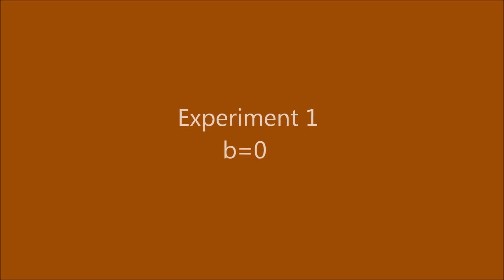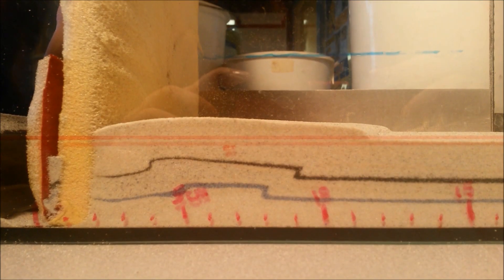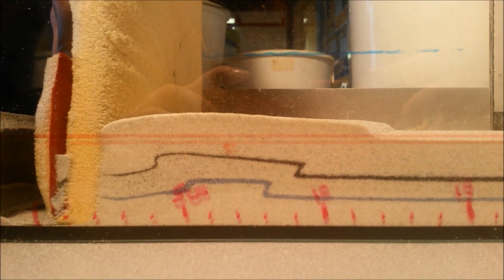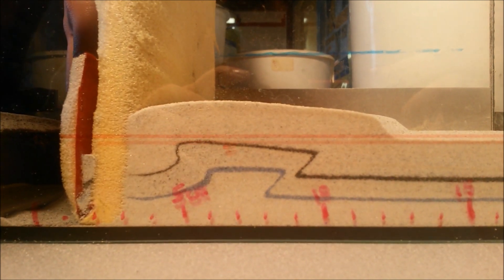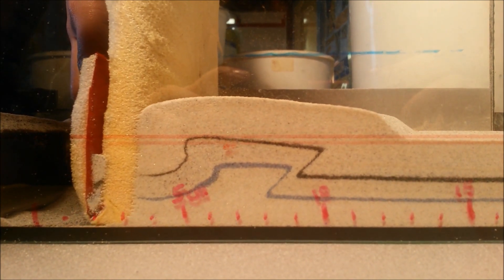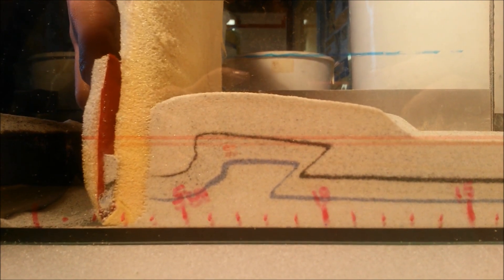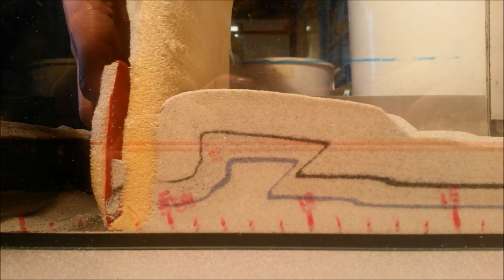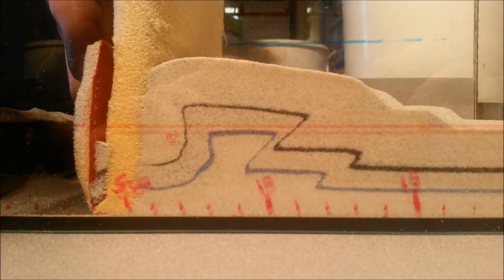In this first experiment, we kept the aquarium horizontal so that beta is at a 0 degree angle. You can see the internal deformation: two thrusts and one back thrust form in this initial stage of deformation. We decided not to further investigate all the internal thrust angle relations, but to focus on the critical taper.